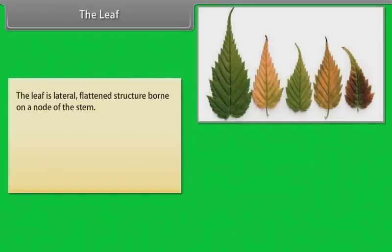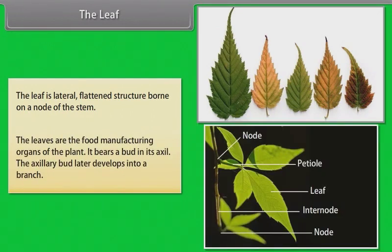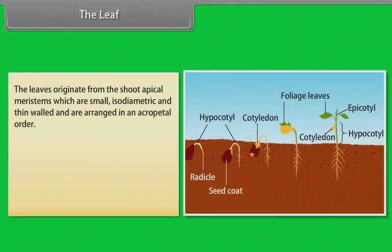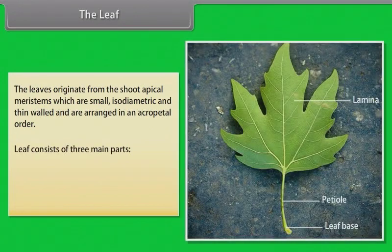The leaf is a lateral, flattened structure born on a node of the stem. The leaves are the food manufacturing organs of the plant. It bears a bud in its axil. The axillary bud later develops into a branch. The leaves originate from the shoot apical meristems, which are small, isodiametric and thin-walled, and are arranged in an acropetal order.